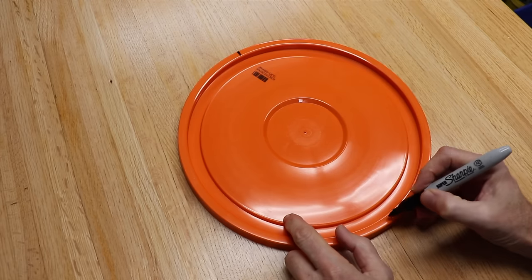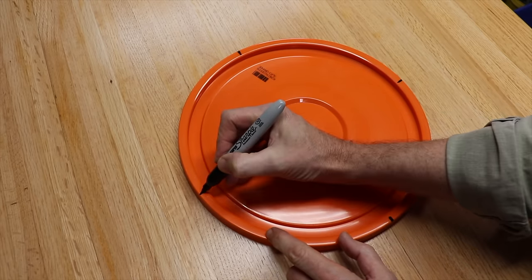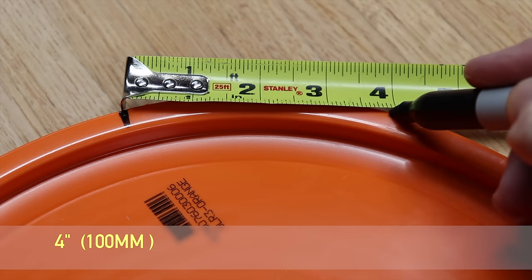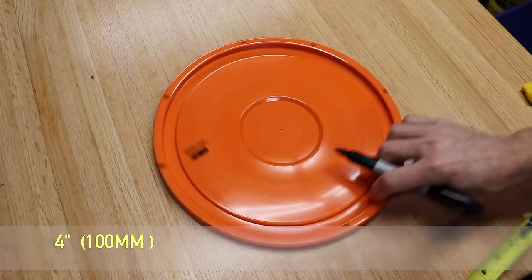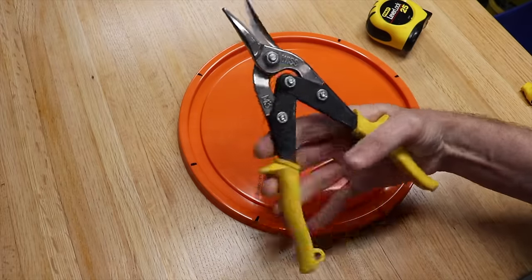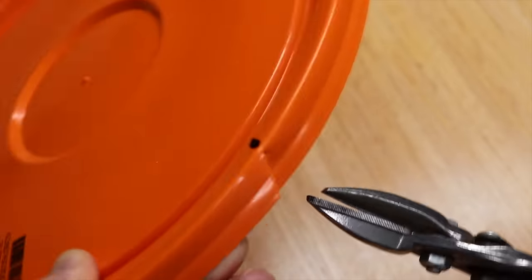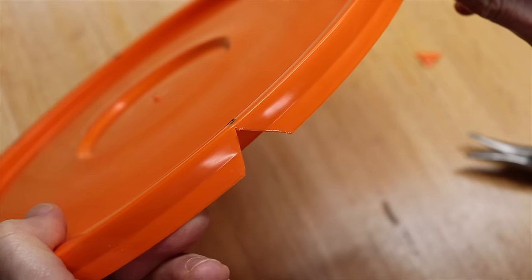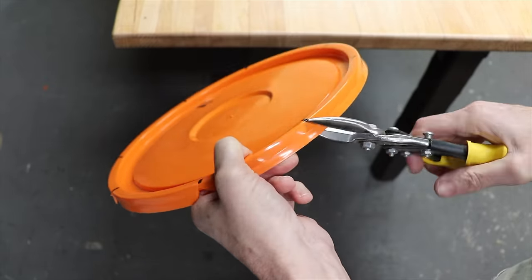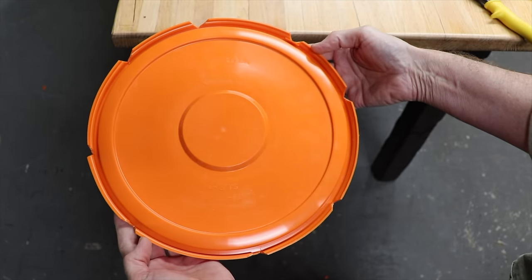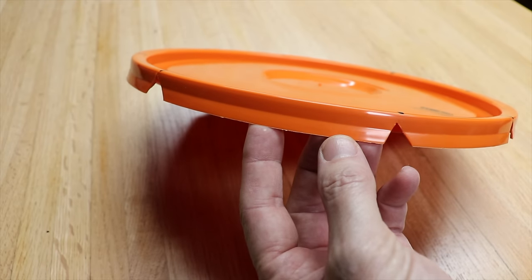So first take your lid and mark it at 12 o'clock, six o'clock, three o'clock and nine. And then from those marks measure over four inches. And now take a pair of tin snips and cut out a V at each of the eight marks. And now cut the long sections off and leave the short ones.